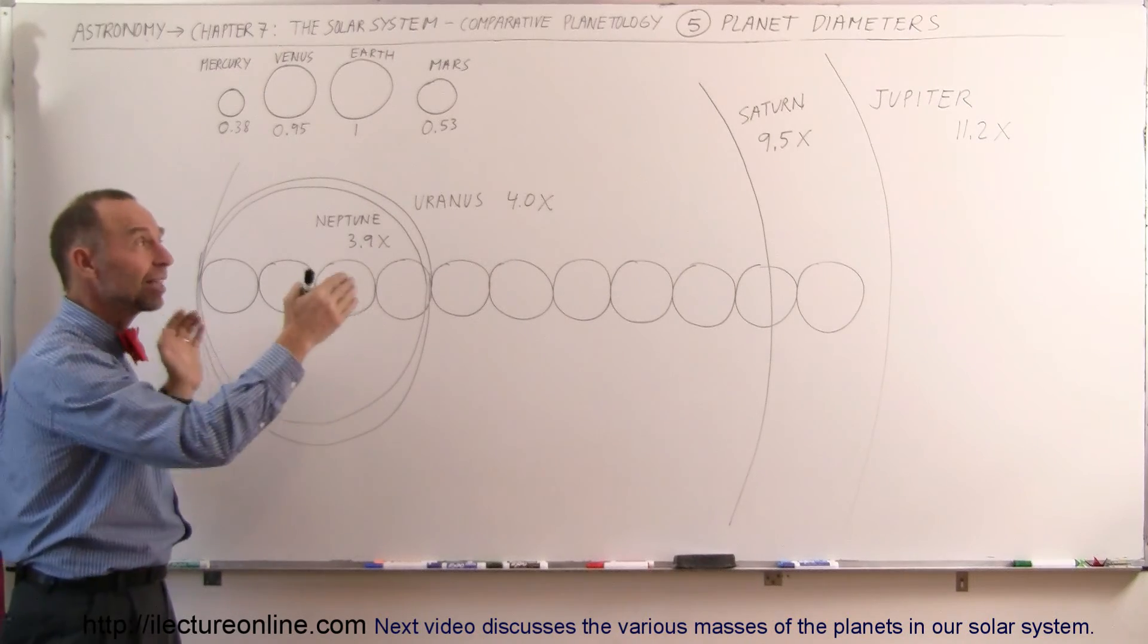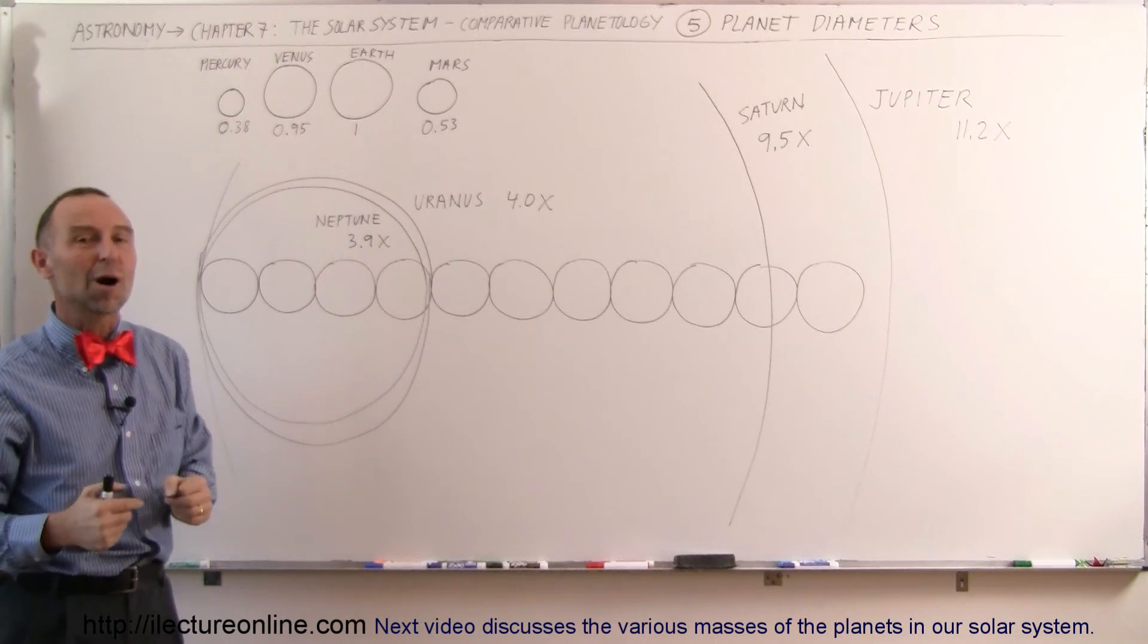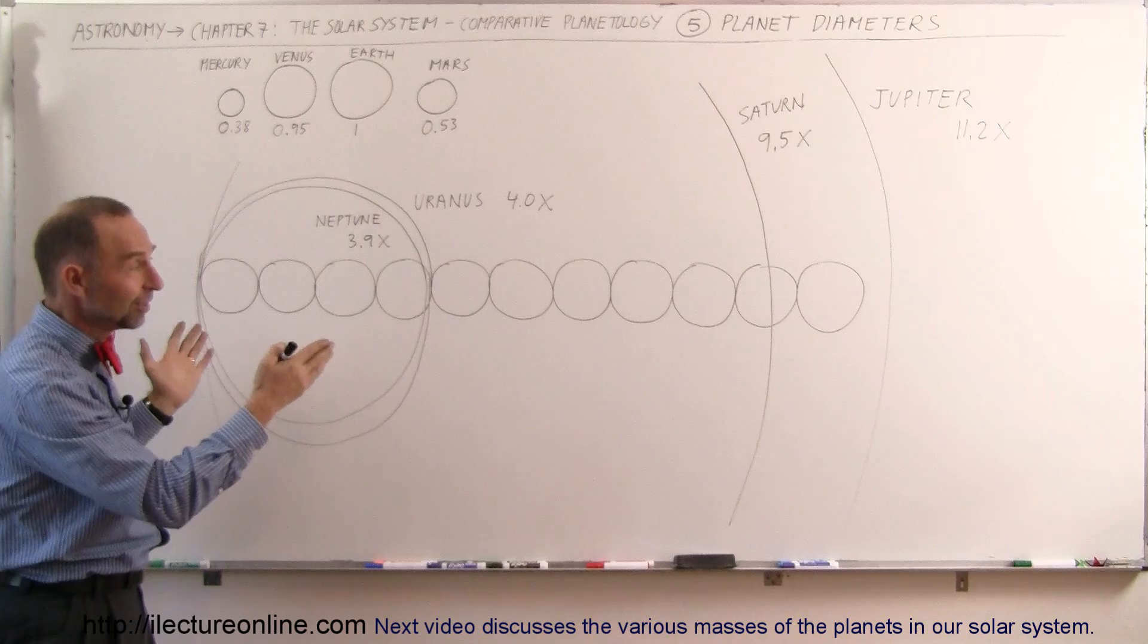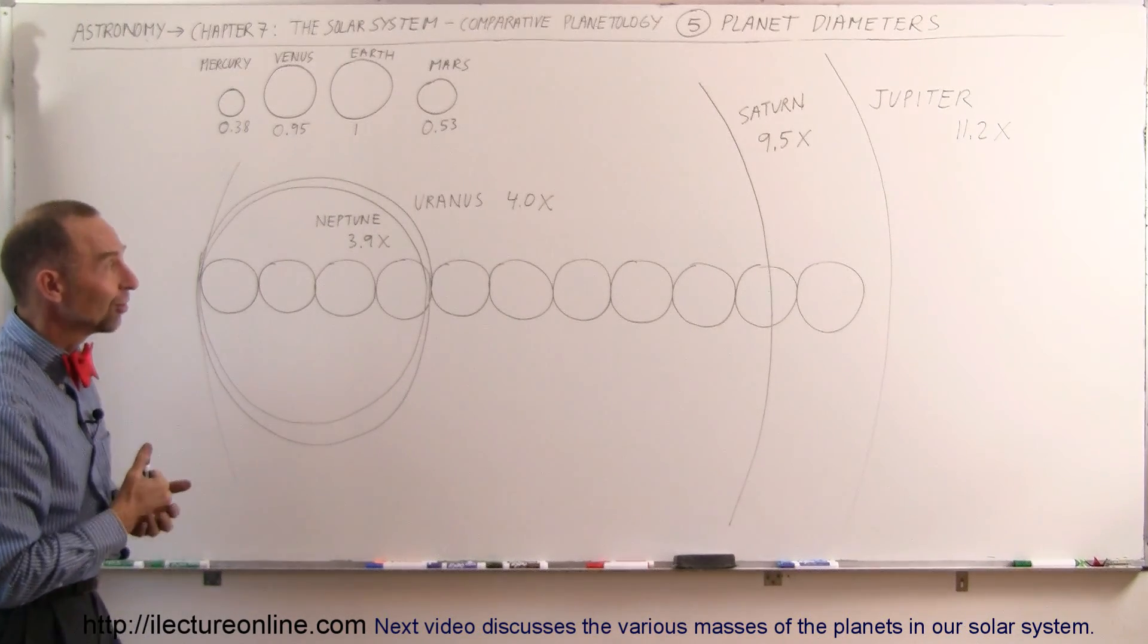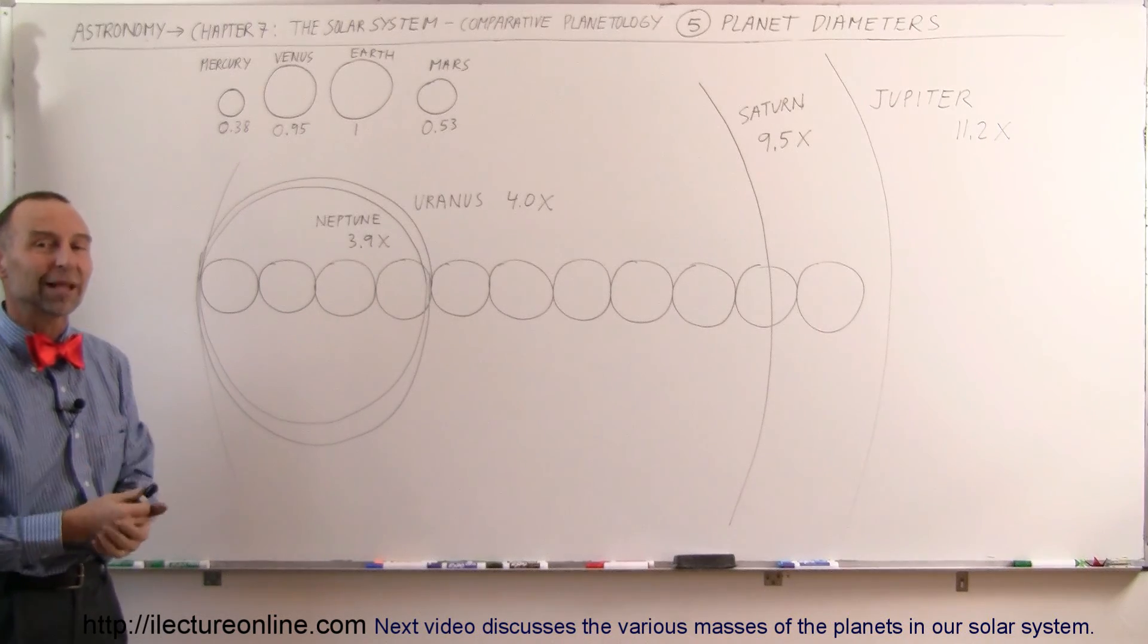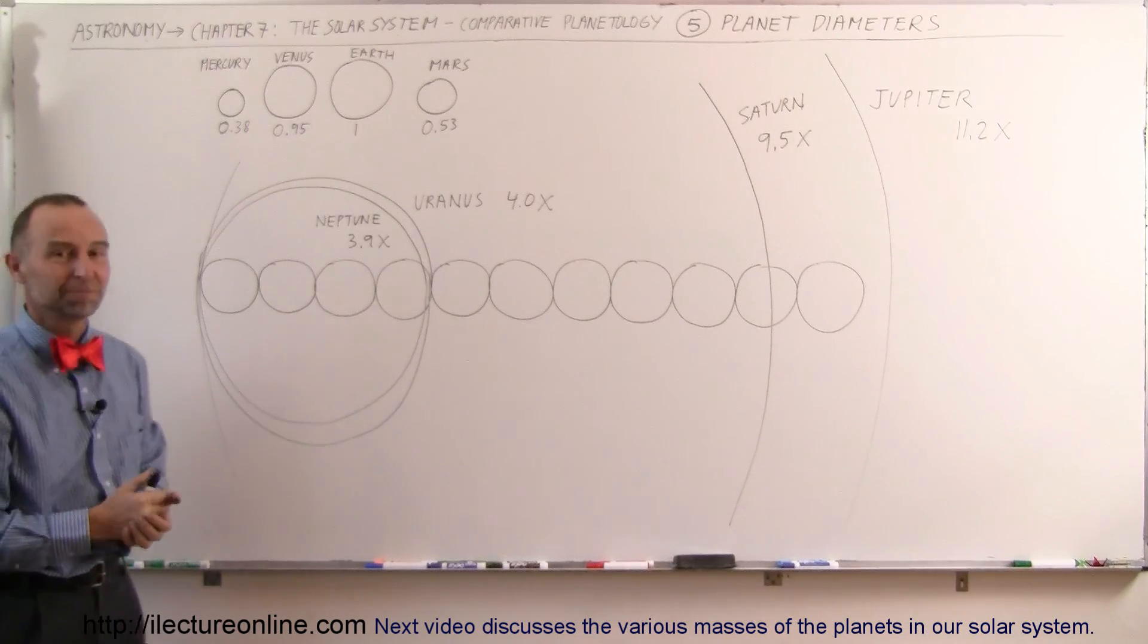So relative to the Sun, even the giant gas planets are relatively small. But compared to each other, the gas planets is where it's at when it comes to size. And this is hopefully giving you a pretty good appreciation for the size of the planets. Thank you.